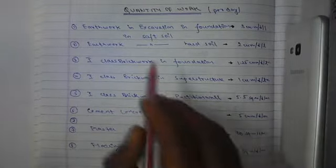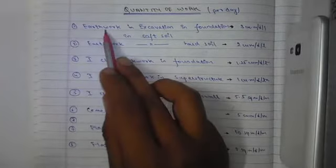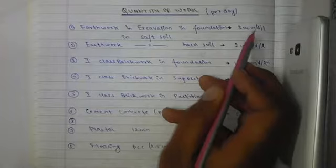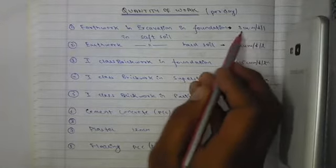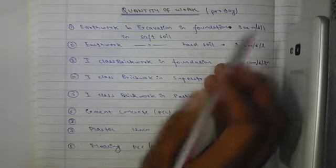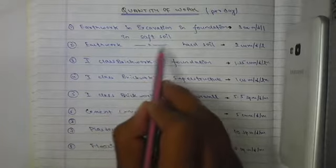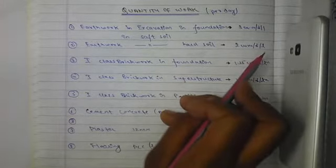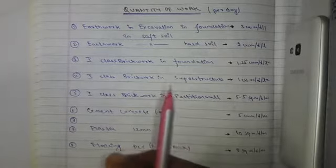Earthwork in excavation in foundation in soft soil: a labor can do three cubic meters per day. Earthwork in excavation in hard soil: two cubic meters per day per labor, where hard soil is present.